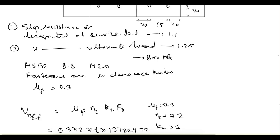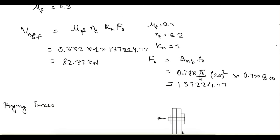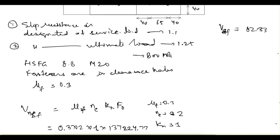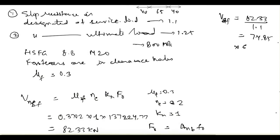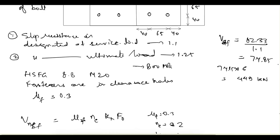For the first criteria — slip resistance designated at service load — the design shear resistance Vsf = Vnsf / γmf = 82.33 / 1.1 = 74.85 kN per bolt. Since there are 6 bolts on the section, the total shear capacity is 6 × 74.85 = 449 kN. At ultimate load, bearing failure can happen, so the bearing strength should also be checked using the bearing and shear capacity formulae from the bearing bolt analysis.